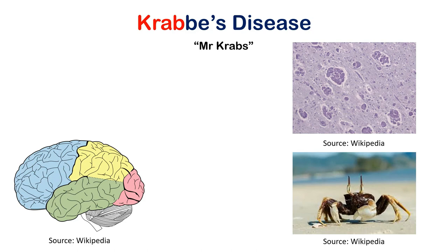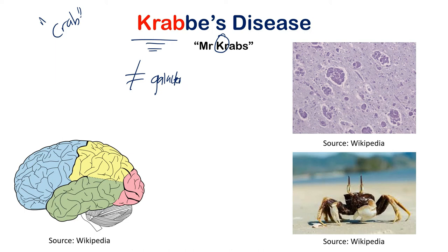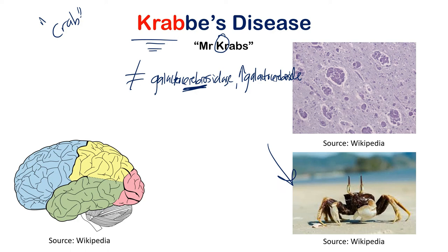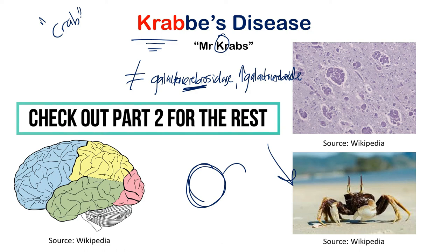Krabbe's disease — think of Mr. Krabs from SpongeBob. In Krabbe's disease there's a deficiency of galactocerebrosidase — another G enzyme, but distinct from the others. Because of this deficiency you get a buildup of galactocerebroside. A crab has a big thick body with limbs extending out, which can help visualize aspects of this disease.